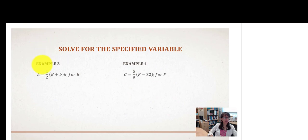In example 3, we have a equals 1 half times the quantity capital B plus lowercase b times h. Capital and lowercase b are two different variables, so do not combine those. We want to rearrange this formula or literal equation for capital B. So, here's where it's located. We have several things we'll need to take care of here. We've got parentheses, we've got a fraction, we've got multiplication.